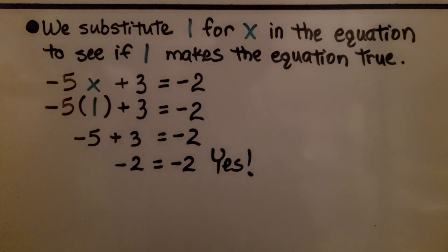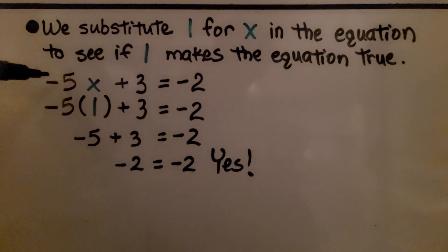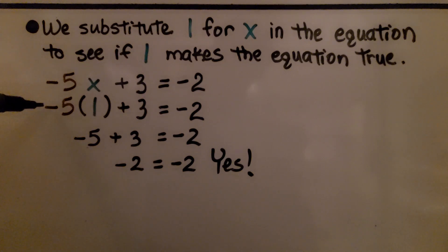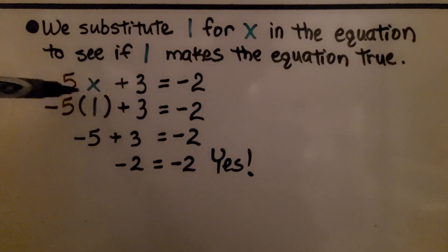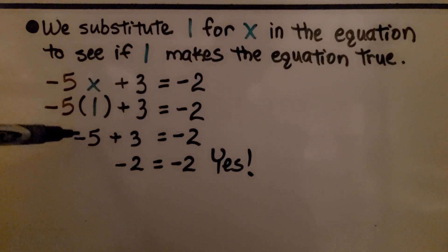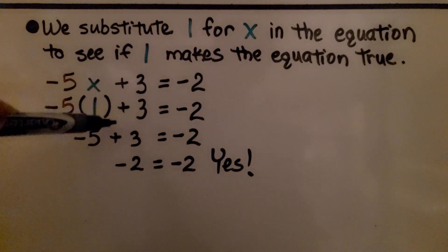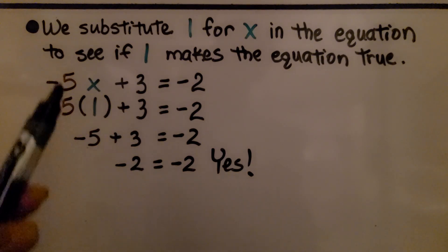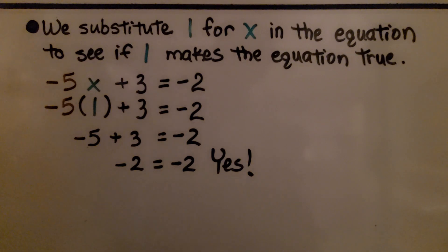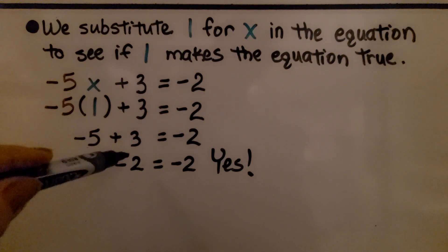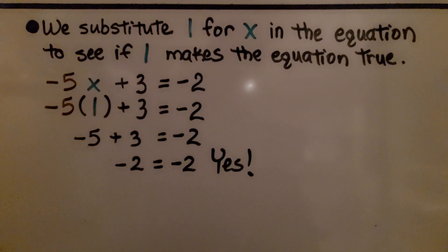We substitute 1 for x in the equation to see if it makes it true. We had negative 5x plus 3 is equal to negative 2. Substituting 1 for x: negative 5 times positive 1 gives us negative 5 — unlike signs give a negative result. Adding 3 moves us back up toward 0 on the number line, giving us negative 2. And negative 2 is equal to negative 2, so yes, x is equal to positive 1.